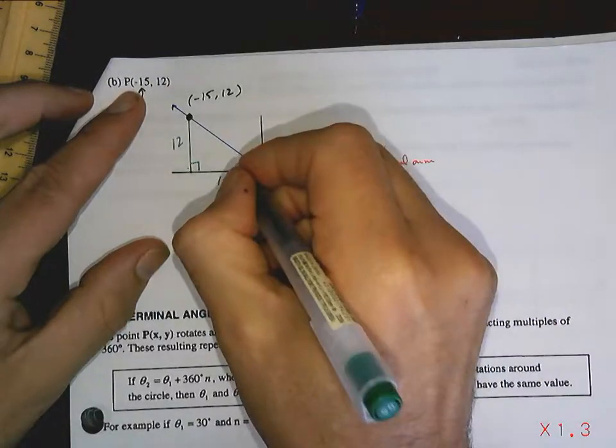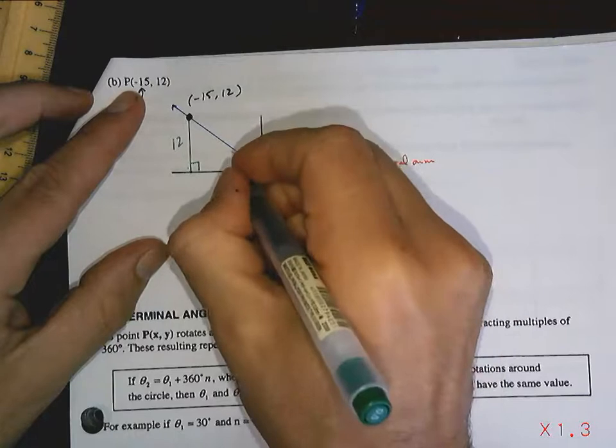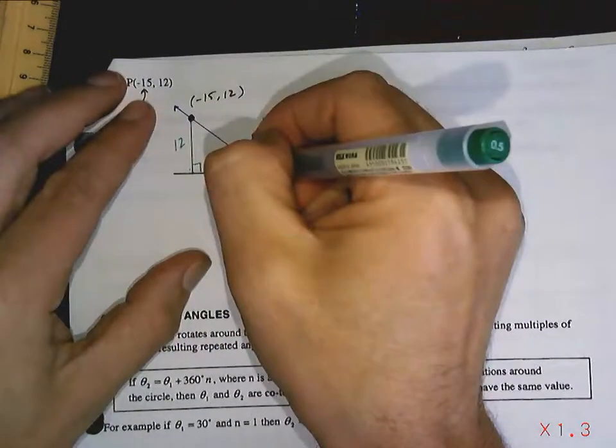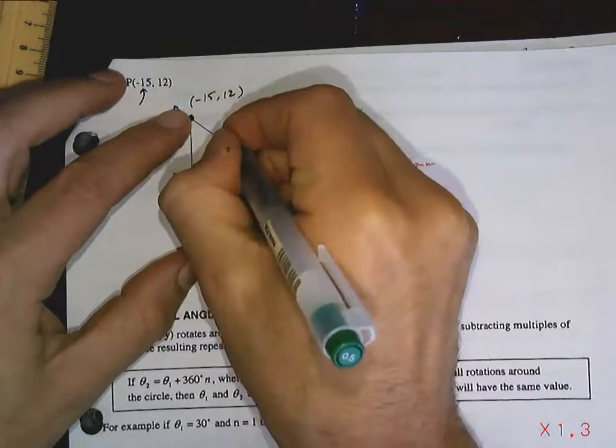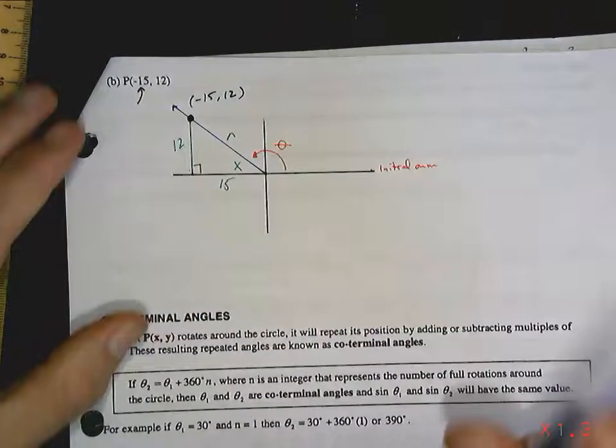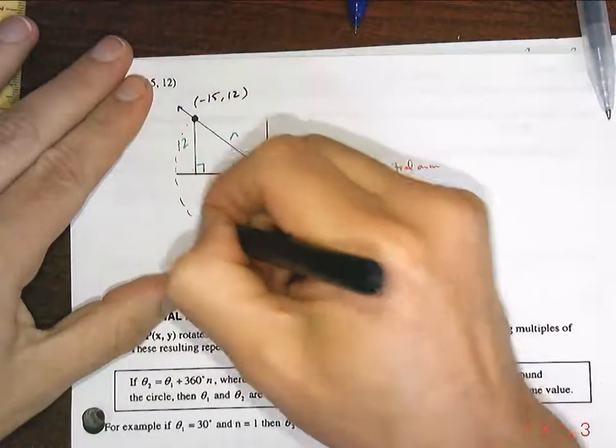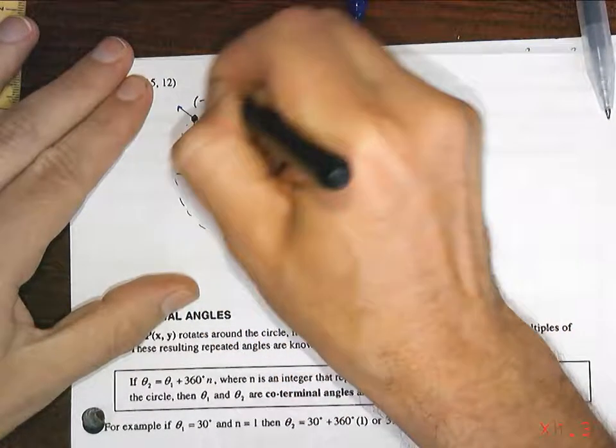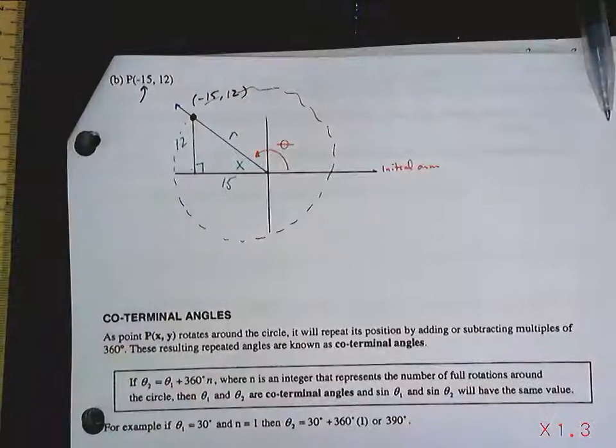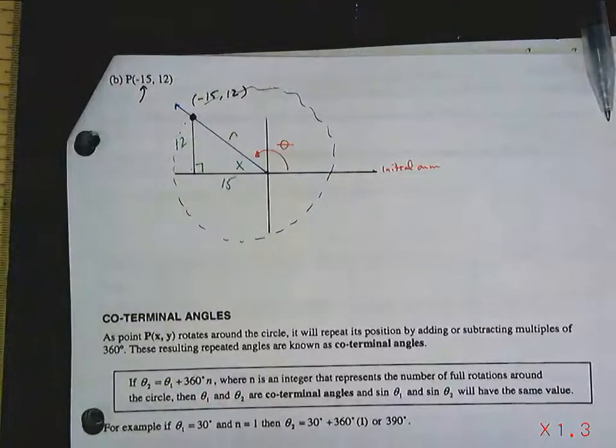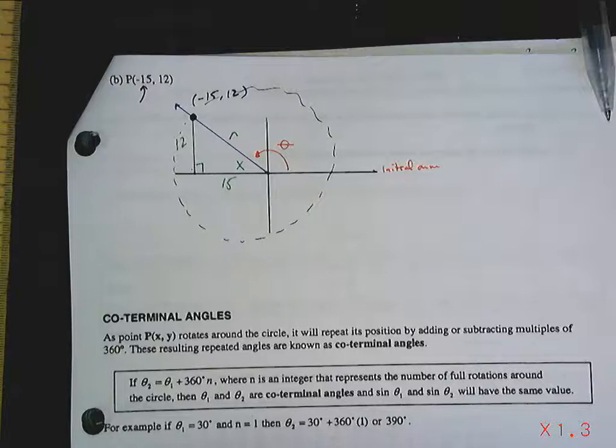So now we have some questions. This angle here, I'm not going to call it theta. I'm going to call it x, just because I chose x. And this distance from here to here I'm going to call the radius r, because this arm would continue to rotate all the way around that circle. So we just happen to be stopping at negative 15 comma 12. Now stop and look at that. Make sure that all makes sense to you.